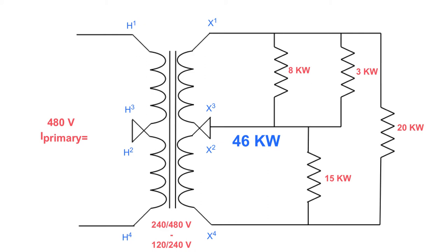Which works out to be 46 kW. So at this time right now, this transformer, the secondary side, is wanting to use 46 kW. Which means if this side is wanting to use 46 kW, then this side here has to give 46 kW.